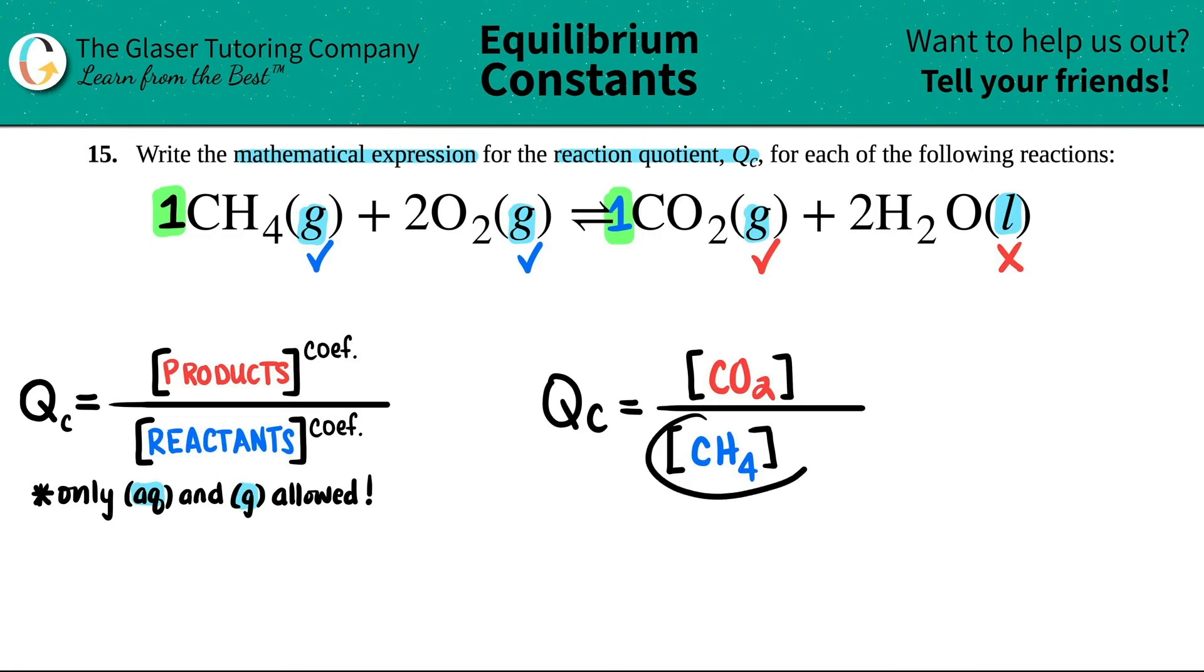Now, just know that when you have multiple compounds, right? I have CH4 and O2, it's going to be multiplied. So you could put the multiplication sign, or you could just put the next bracket next door. But just know that those values, when we get to the math, you're going to multiply them.